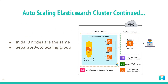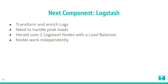For auto-scaling, Herald keeps the three initial nodes as-is and then creates a separate auto-scaling group that starts with one node and scales up to meet increasing demands. With that, we have successfully added Elasticsearch and Kibana to Herald.